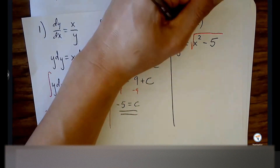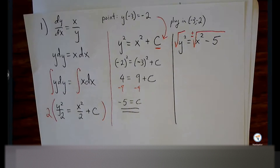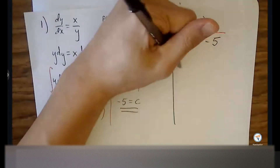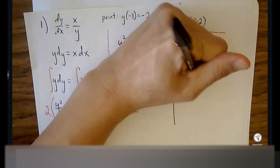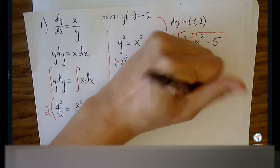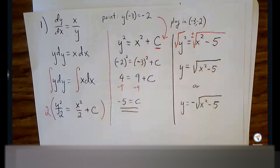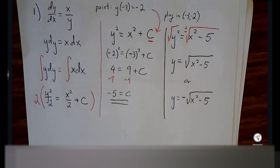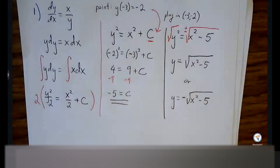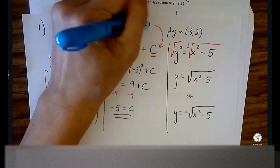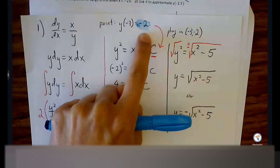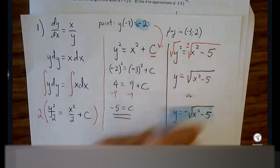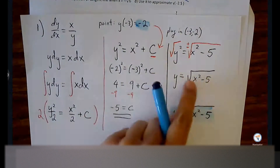Don't forget plus or minus — which tells us that we have two potential solutions, but only one is going to apply for our problem. How do we know which one to choose? Because the Y value gives us a negative. So make sure you're specifically looking at the Y value — the X value is not going to tell us what to choose. If the Y value is negative, that's going to tell you to choose the negative square root. If the Y value is positive, then you'll choose the positive square root.